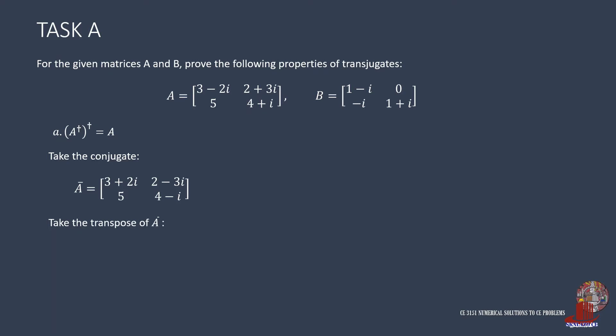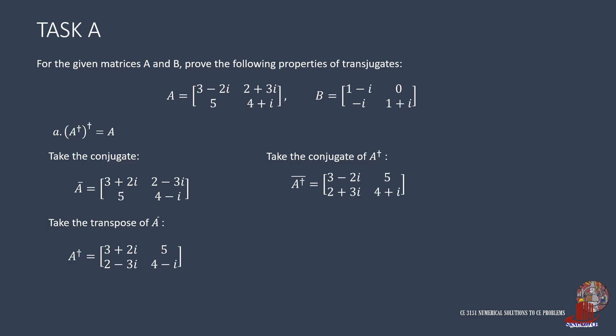After the conjugate, the next step is to take the matrix's transpose, which turns the elements as shown. In matrix transposition, the diagonal elements stay in their indices. This is the first transjugate, so the outcome goes to another conjugate. Element 1,1 would have 3 minus 2i; element 2,1 makes 2 plus 3i; element 1,2 stays the same as 5; element 2,2 becomes 4 plus i. Then take the transpose of the matrix, and it turns out exactly back to the original matrix A.